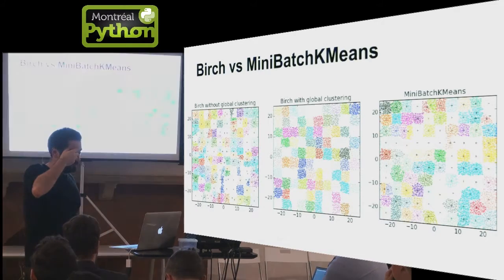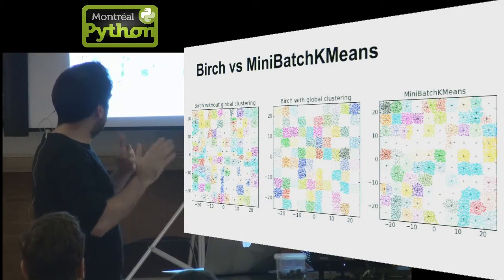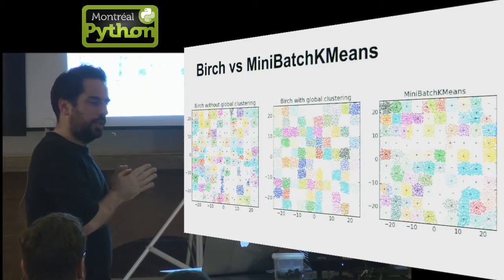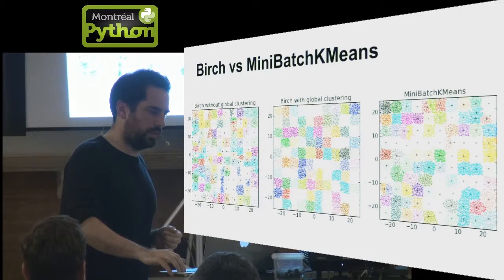Here is an example of the behavior of Birch on a uniform data set in 2D. A perfect clustering will be like a checkerboard, and you can compare this to mini-batch k-means on the right, which is another out-of-core algorithm for clustering in scikit-learn. But this does not maintain the internal data structure, so if it makes mistakes at the initialization time at the beginning, it tends to retain those mistakes. Whereas with Birch, as the final clustering is done at the end on the summary, it can fix and get a better clustering than mini-batch k-means.